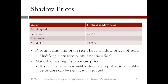This can be answered by looking at the shadow prices of the constraints. We have a constraint limiting the total dose for each voxel in each critical structure. This table shows the highest shadow price for any one voxel in each critical structure. The parotid glands and the brain stem have shadow prices of zero, meaning we're not giving the maximum allowed radiation to these structures, so modifying those constraints is not beneficial. The spinal cord has a shadow price of 96.911, meaning increasing radiation to one voxel of the spinal cord by one unit can decrease total radiation to other critical structures by 96.9 units. The mandible has the highest shadow price of 7,399.72, so if a slight increase in the mandible dose to a single voxel is acceptable, the total healthy tissue dose can be reduced significantly across all voxels in the objective.